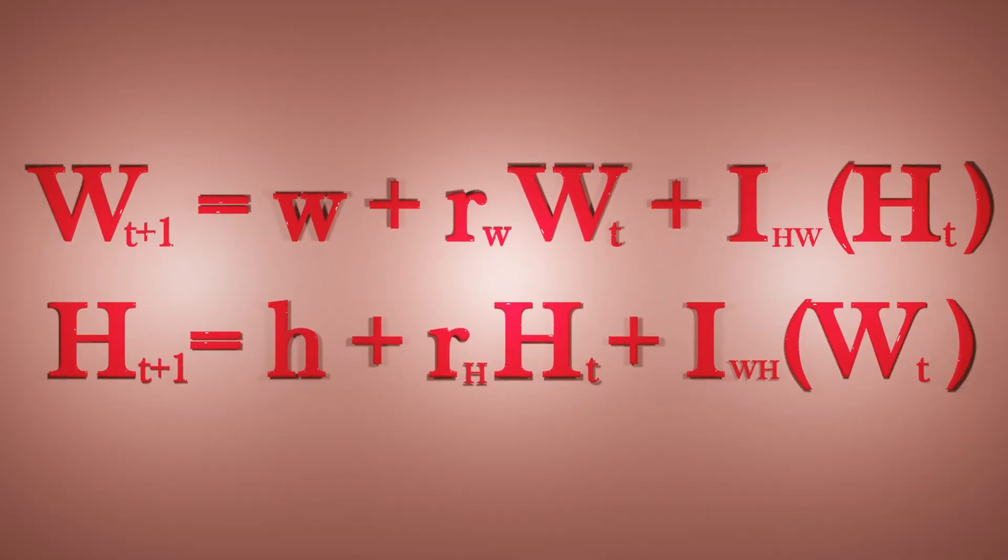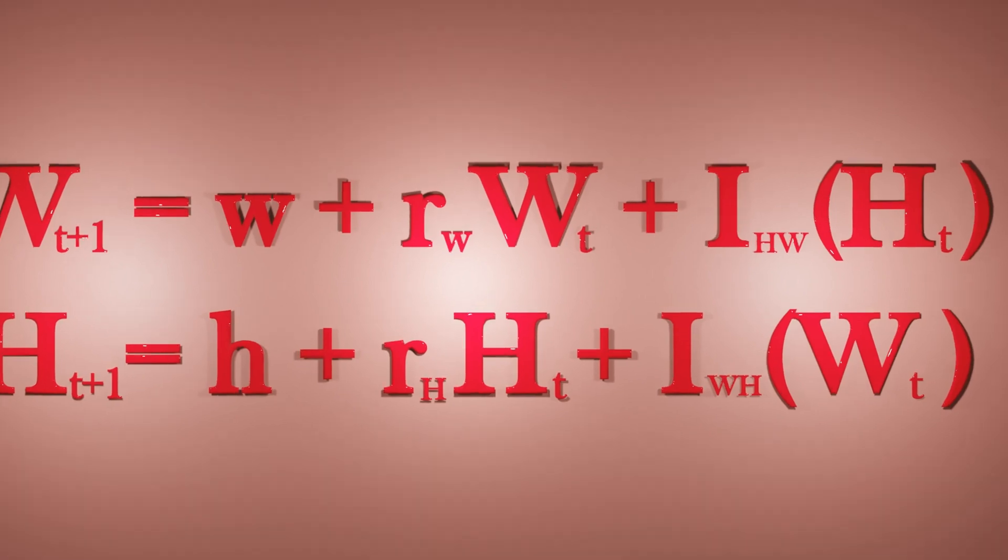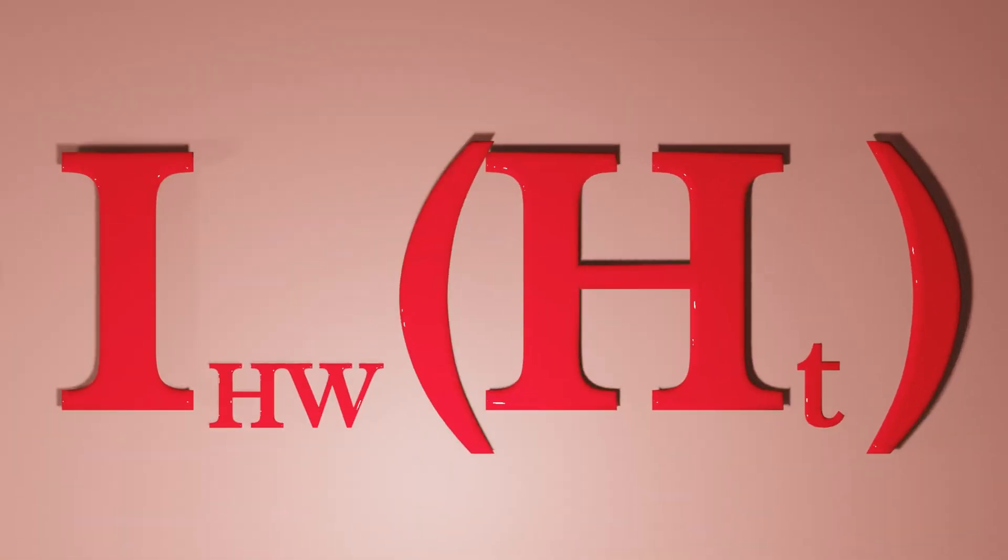However, the most interesting variable in this equation is the influence variable, which includes the notation of wt or ht in parentheses to communicate that the influence that an individual has is determined by their current action.